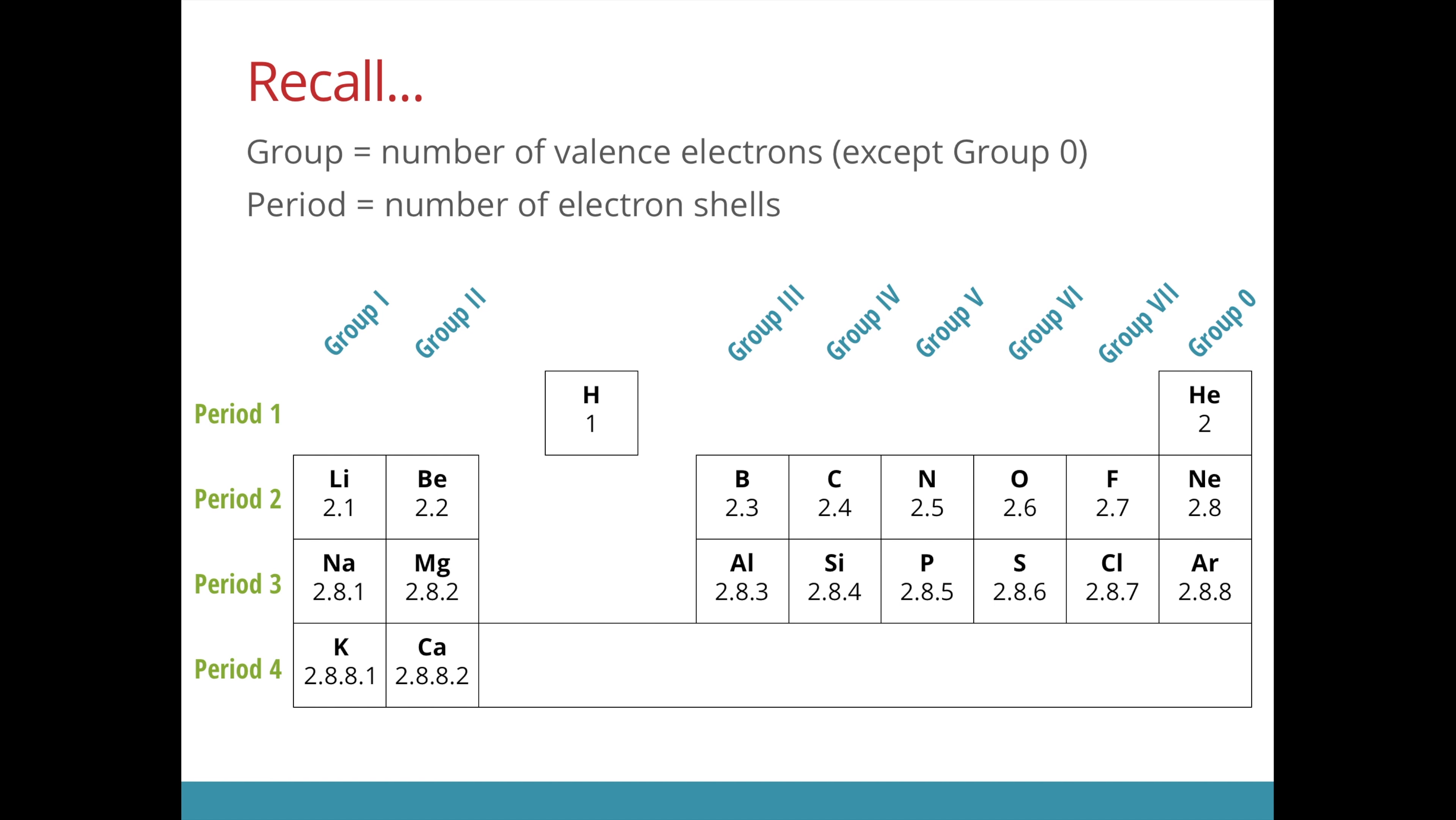If we look at the periodic table, we see a relationship between the group number and the number of valence electrons. A group 4 element has 4 valence electrons, while a group 5 element has 5 valence electrons.